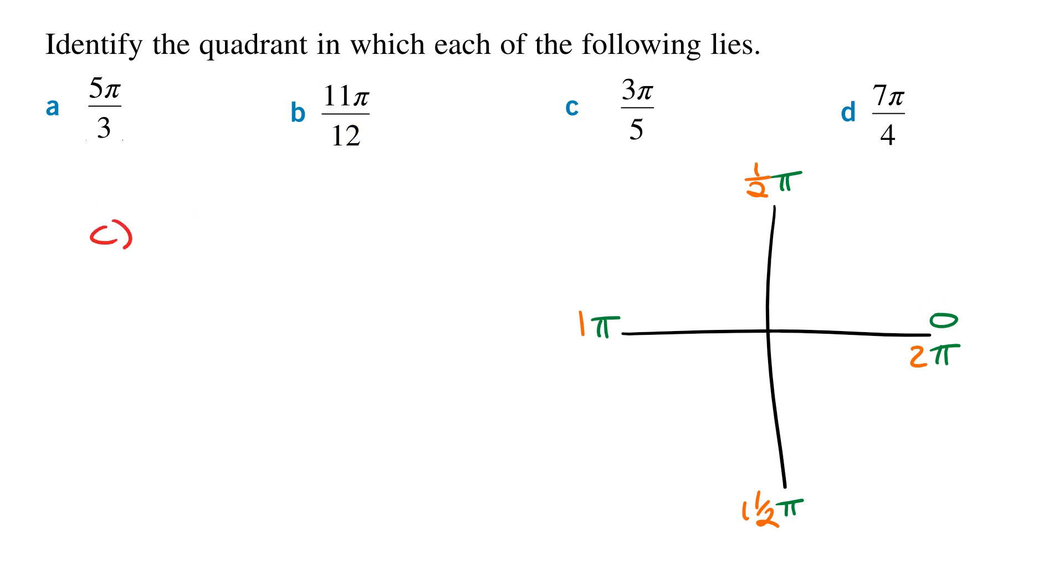Part C. Again, looking at the number part, this is 3/5. 3/5 is already in proper fraction form, and so we write it as 3/5 of π.